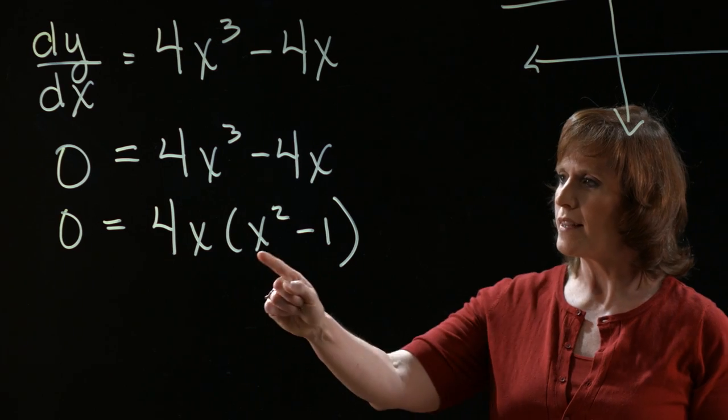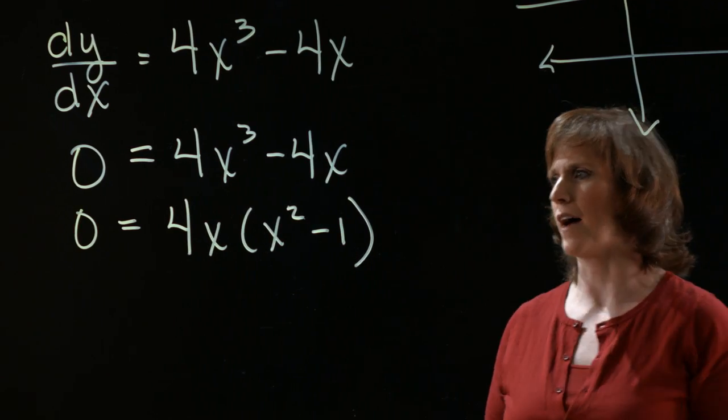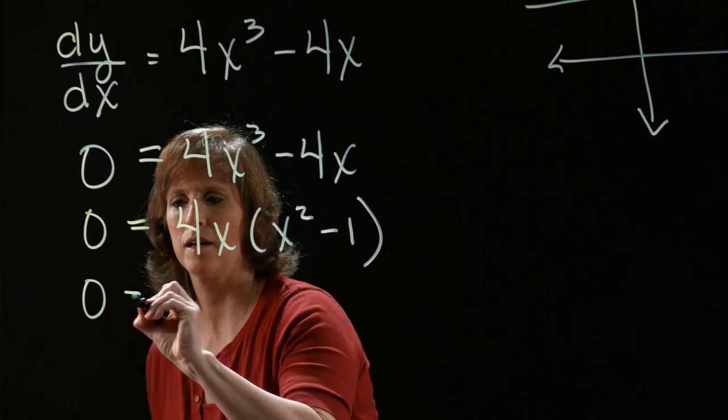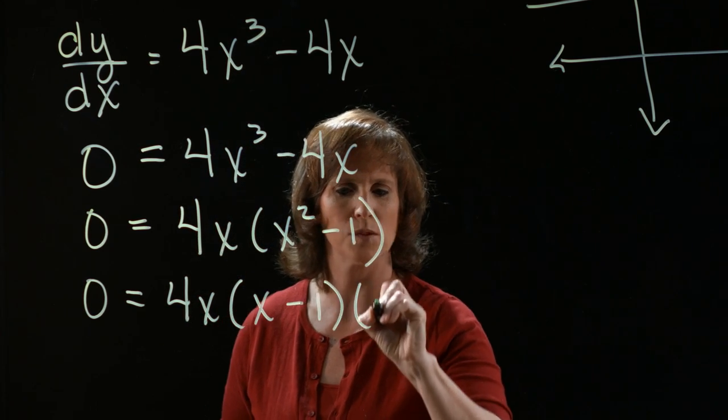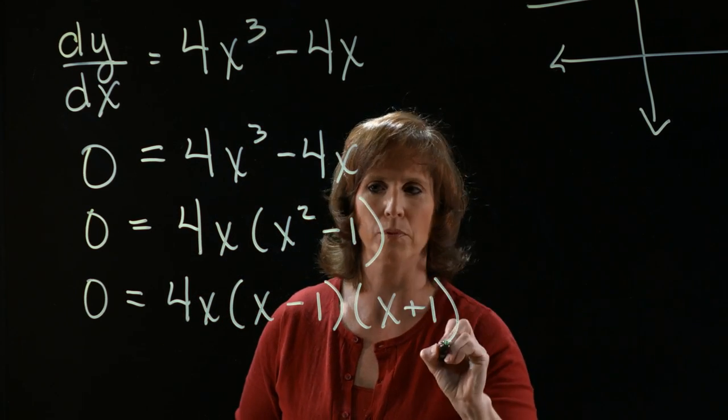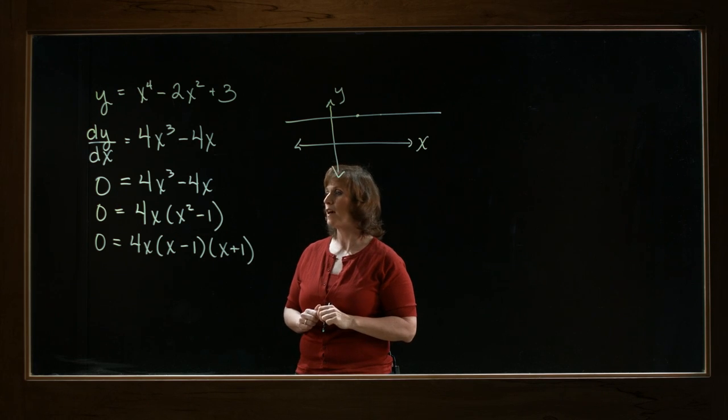Then I notice that x squared minus 1 can also be factored. And it will be factored into the quantity x minus 1 times the quantity x plus 1, because it's a difference of squares.